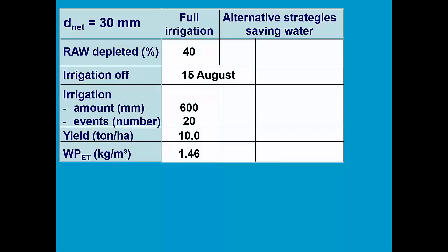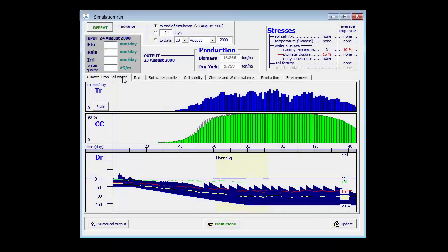In the first alternative irrigation strategy, we allow the root zone to deplete to 100% rho before 30 mm is supplied. As such, we can save 25% of the irrigation water, the yield drops slightly by 2%, but the ET water productivity increases to 1.56.